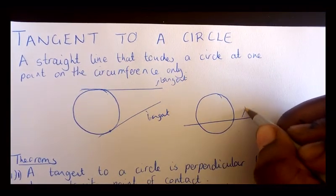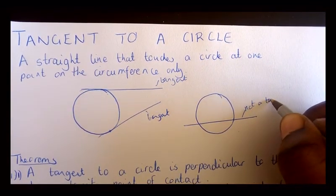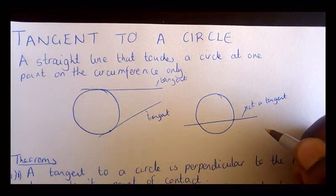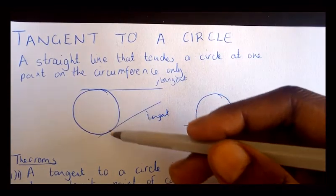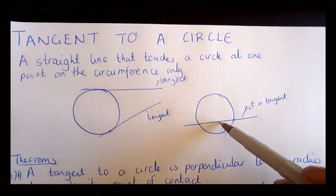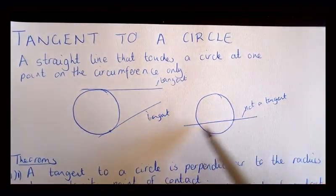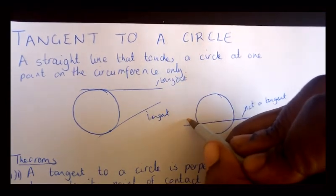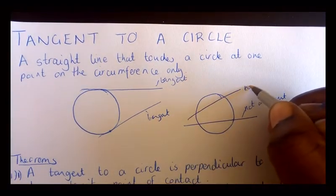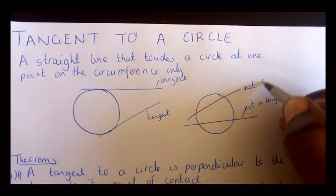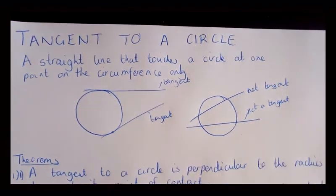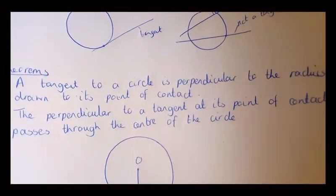This is not a tangent because it touches the circle at two points on the circumference. Also, a tangent is an exterior angle, not an interior angle, so this is not a tangent. Even if you draw this line here, it is not a tangent. Now let us proceed to theorems.